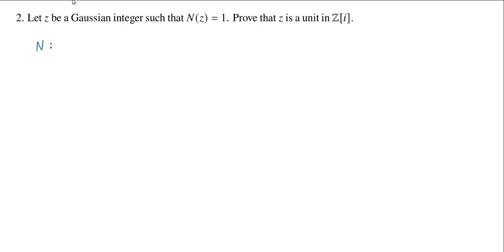The norm map takes a Gaussian integer, which we can write in the form a plus bi, and returns a non-negative integer. It's given by a squared plus b squared, or you could also say this sends z to z times its conjugate.